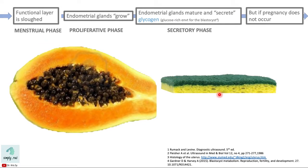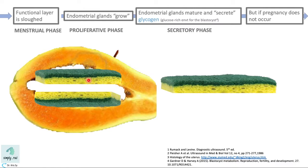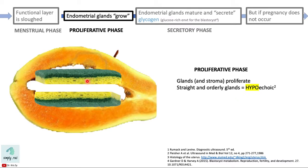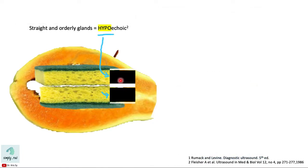Here's the endometrium lining the uterus, with a layer in the anterior wall and another in the posterior wall. We start with the endometrium appearing very thin, because the functional layer has just been shed during menstruation. The glands then proliferate — hence called the proliferative phase — creating a straight and orderly pattern of glands in the functionalis layer. Because this layer has straight and orderly glands, this layer will be hypoechoic, meaning it's darker compared to the myometrium.